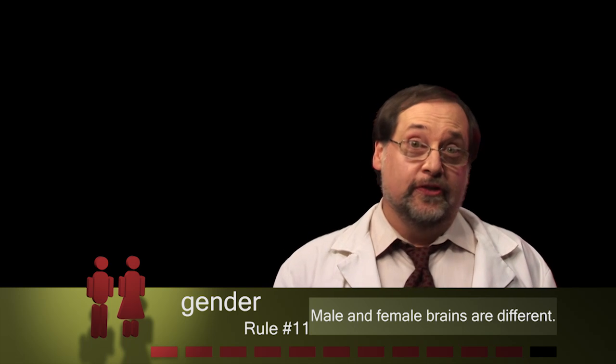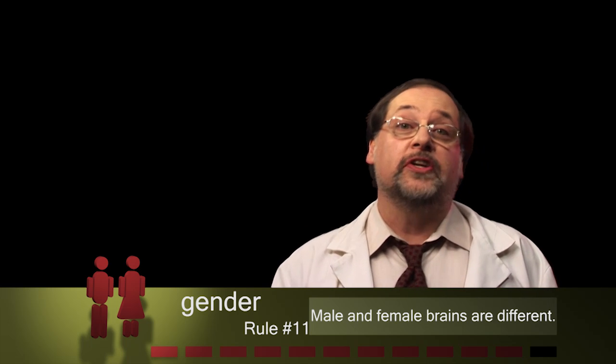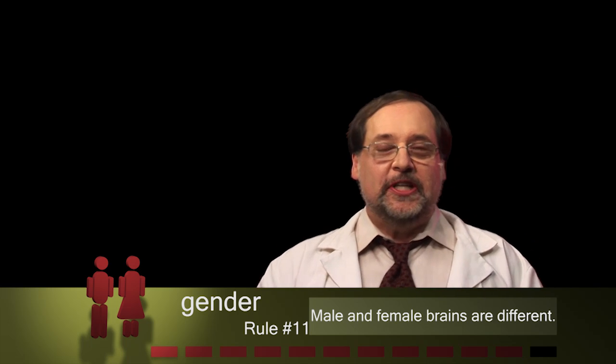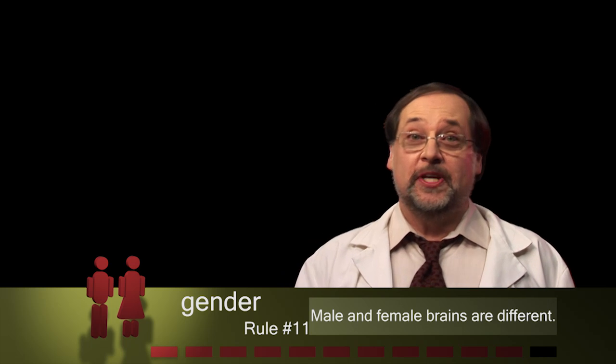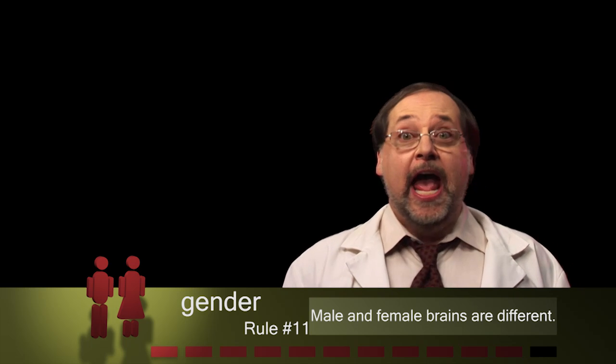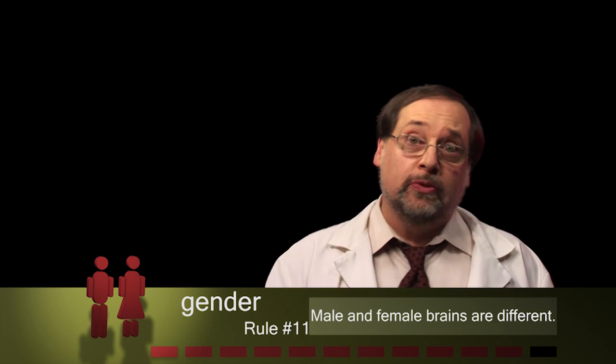Brain rule number 11 is male and female brains are different. We have actually taken pictures of the insides of a typical male and female brain and have isolated various functional regions.